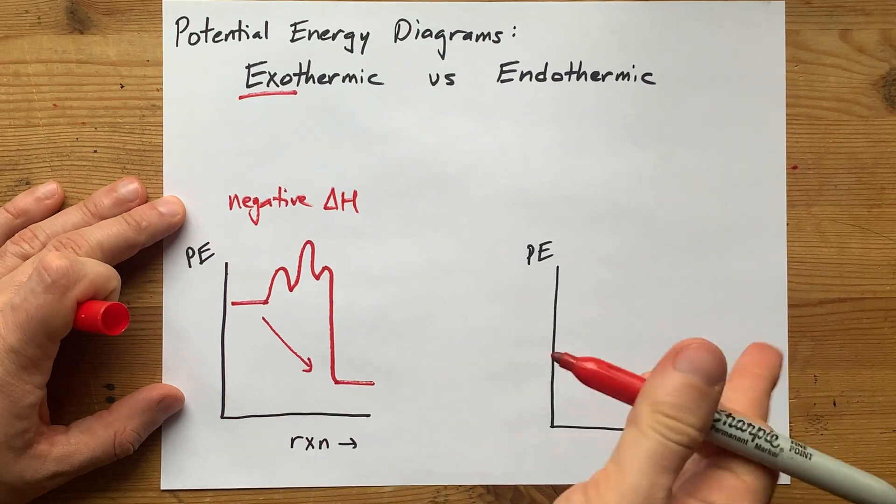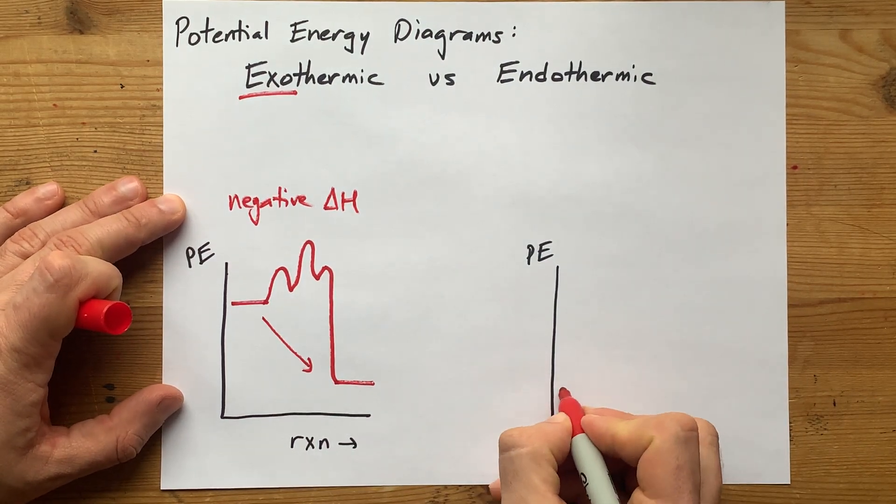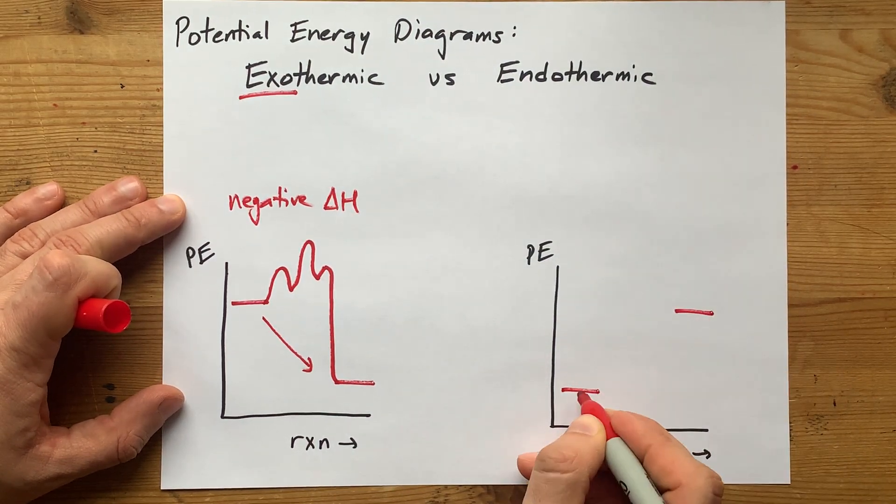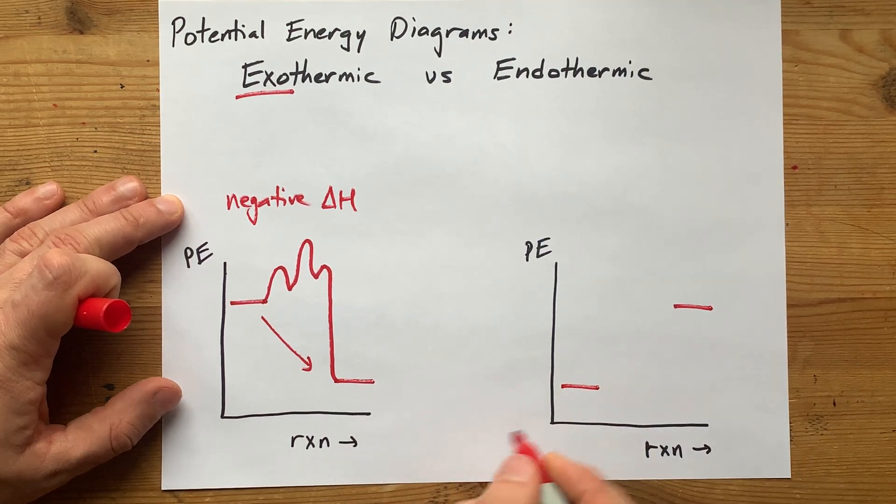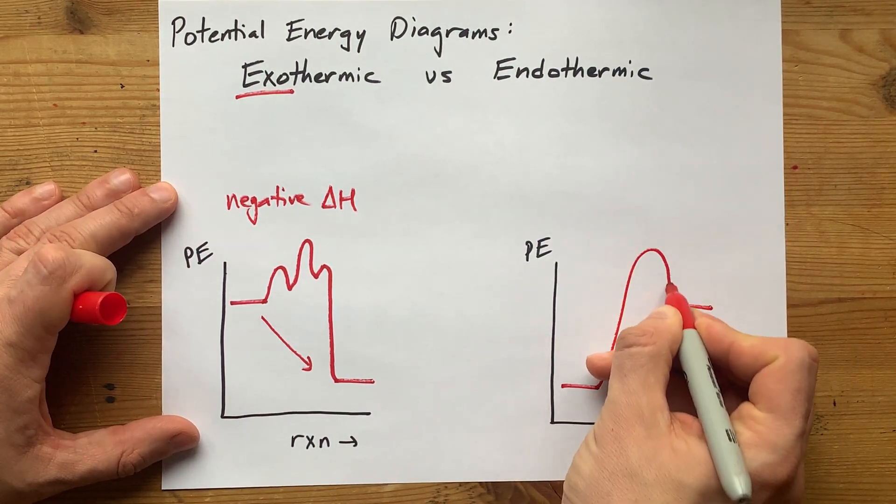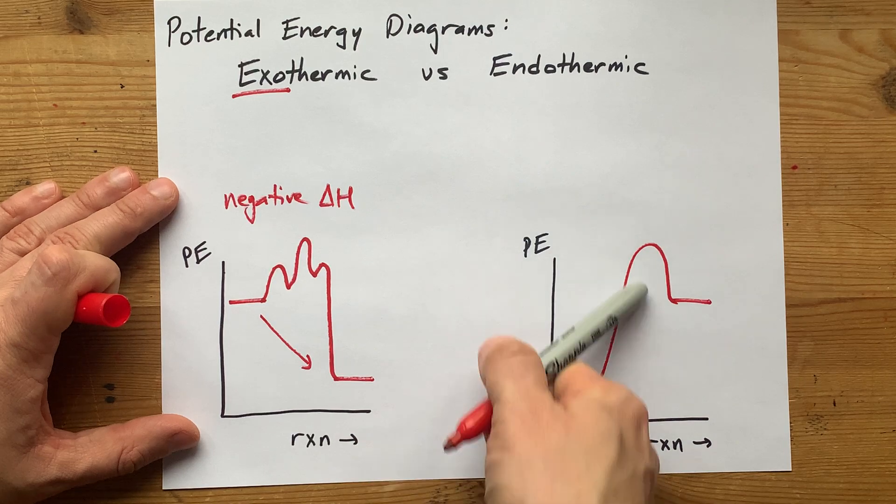In just the opposite way, if your reactants are lower than the products on the potential energy curve, again, it doesn't matter how many humps you have or how high they are.